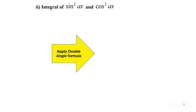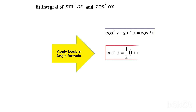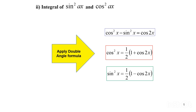There are 3 formulas for double angle. First: cos squared AX minus sin squared AX equals cos 2X. Second: cos squared AX is equal to 1/2 times (1 plus cos 2X). Third: sin squared AX is equal to 1/2 times (1 minus cos 2X).